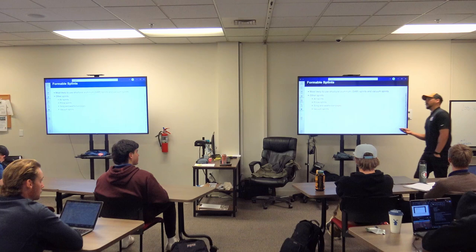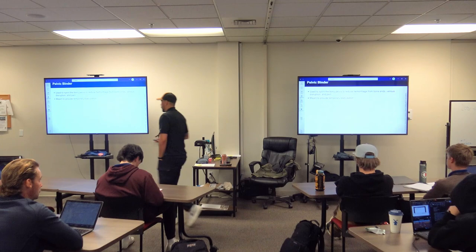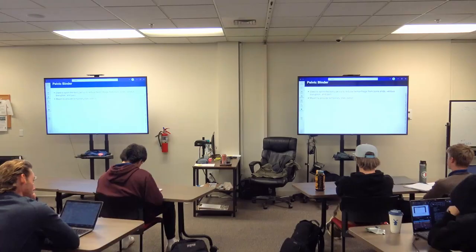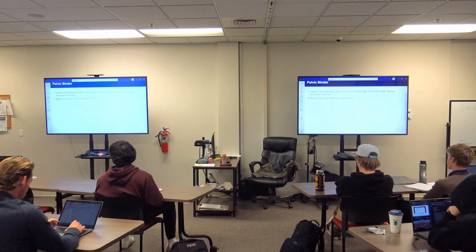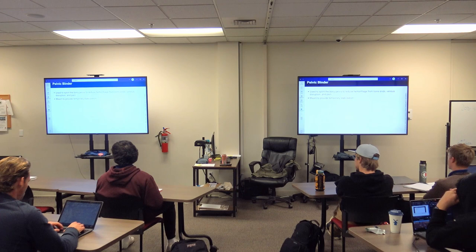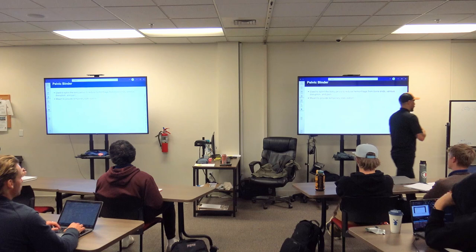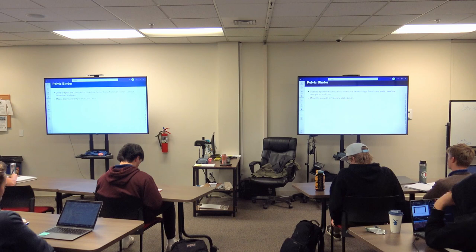A pelvic binder is used for a broken pelvis. The goal is to get everything back in place by covering the hip joints and cinching them together, forcing any cracks tighter. With pelvic fractures we tend to be more aggressive because you can bleed so much — it's a genuine life threat.